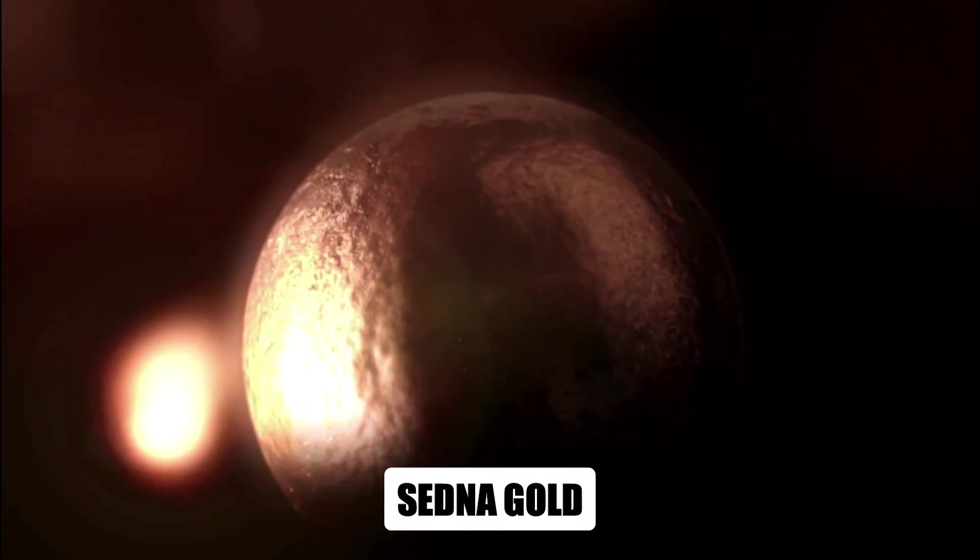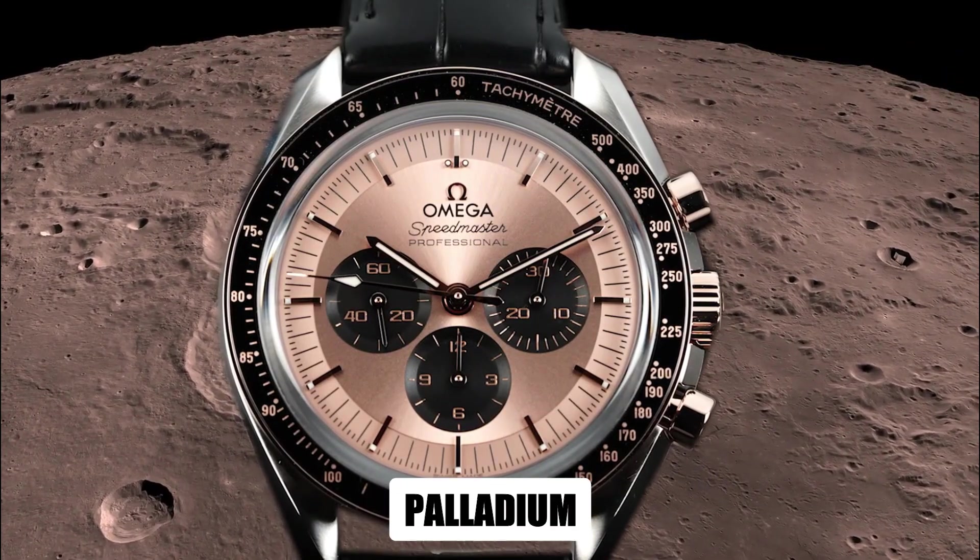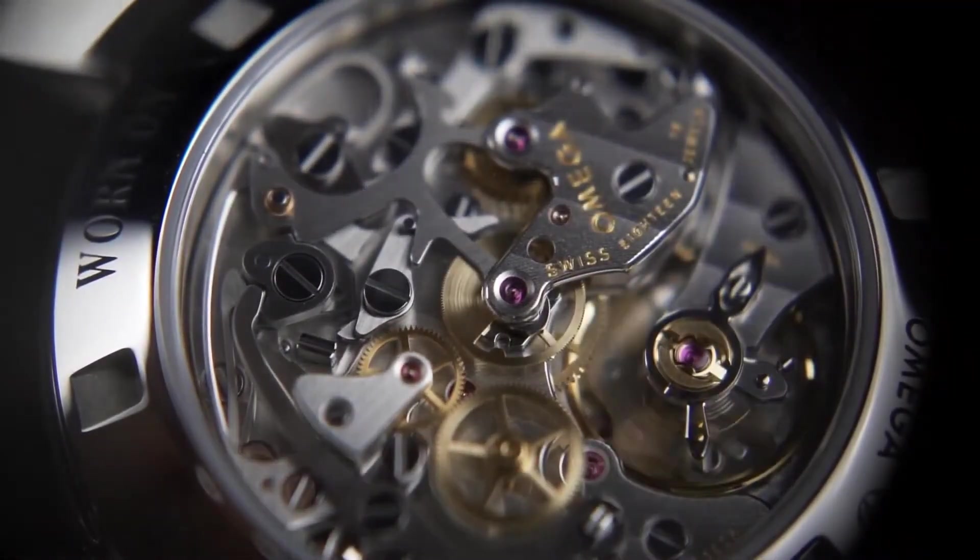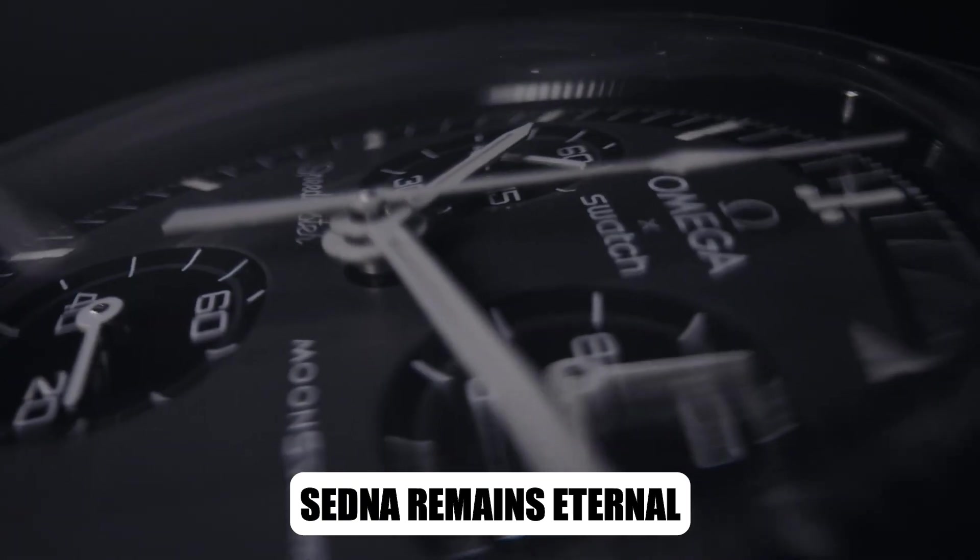Then comes Sedna Gold, Omega's own proprietary rose gold alloy. It fuses copper, palladium, and pure gold into a formula that resists fading, locking in its fiery tone for generations. While traditional gold dulls, Sedna remains eternal.